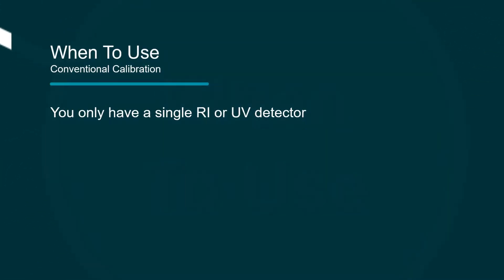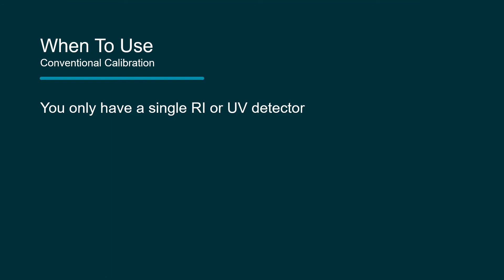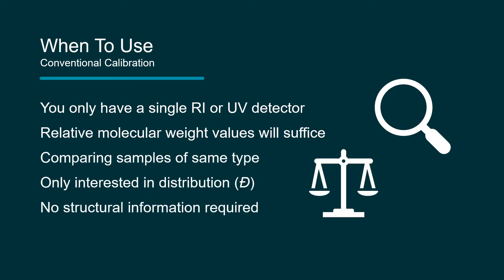While limited in its capabilities, conventional calibration can be a useful analysis method if you only have access to a single concentration detector. It is also valuable if all you need are relative molecular weight values. If you're comparing samples of the same type, only interested in the sample's distribution, have no need for structural information, or are looking for an economical method to analyze your samples, then conventional calibration can work for you.